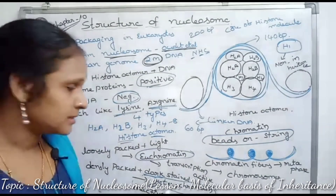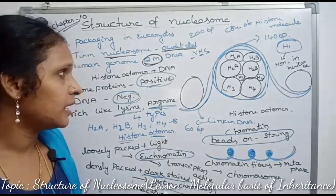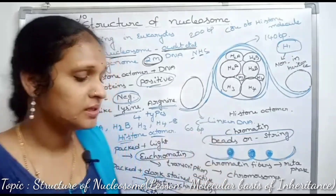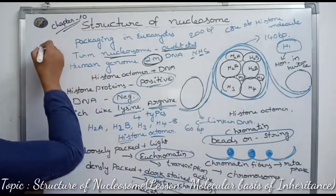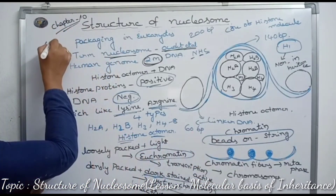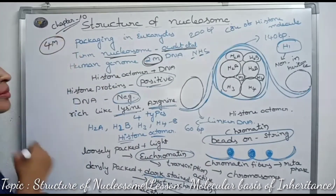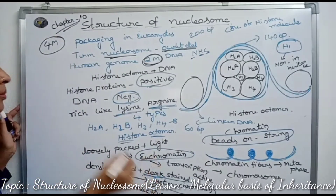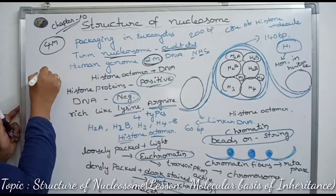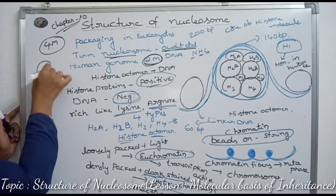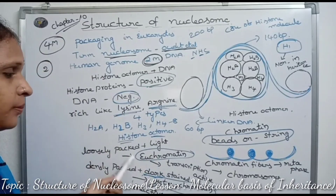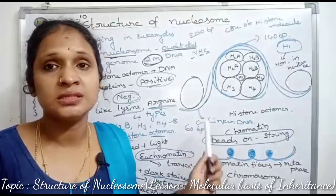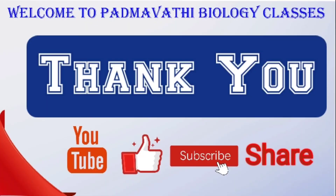Heterochromatin is transcriptionally inactive. This is important for the IPA exam — nucleosome structure is a 4-mark question for intermediate second-year students, and the difference between euchromatin and heterochromatin is a 2-mark question. This is also important for MCQ-oriented exams.